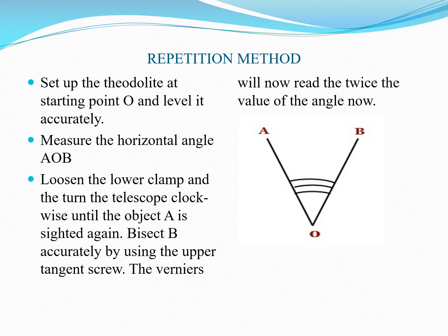For the procedure to determine the horizontal angle AOB using the repetition method: first, calculate the horizontal angle AOB using the direct method. By adopting the procedure for horizontal angle measurement using the direct method, calculate the angle in the first face-left position. This procedure must be followed for the next two readings as well.